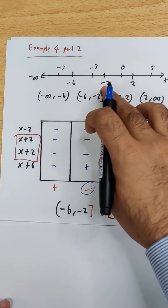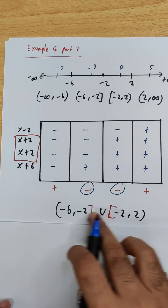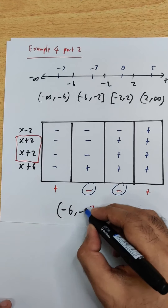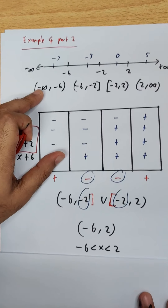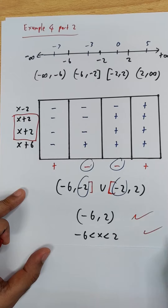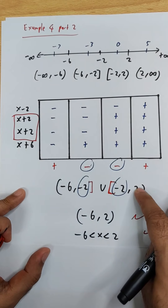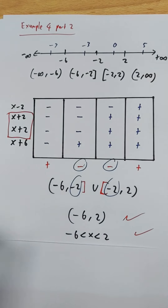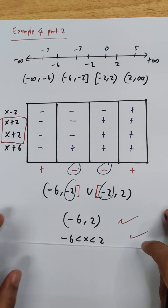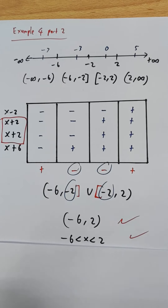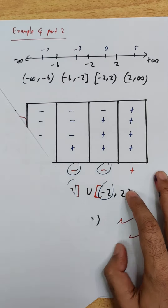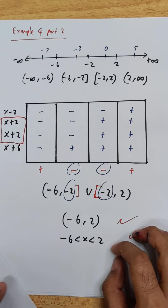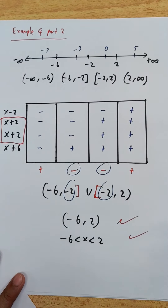We want 'less than', which is negative, so take the positive sections. The answer involves two intervals, both with closed bracket negative 2. Since both sides of the bracket are negative 2, you can combine them. Leave your answer in this combined form — if you leave it as two separate intervals at negative 2 you will lose at least one mark.